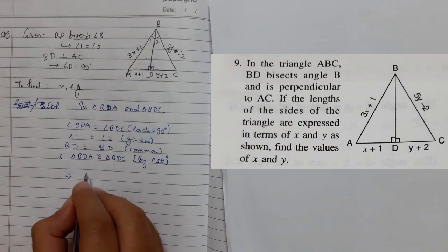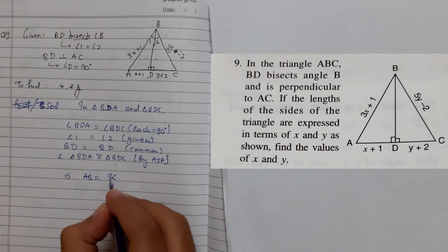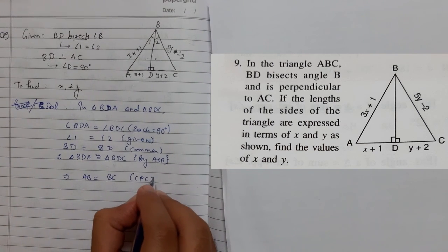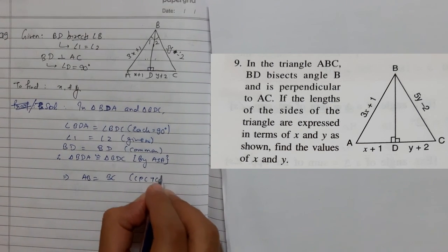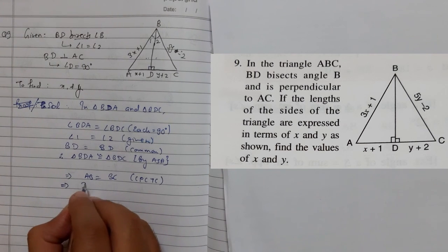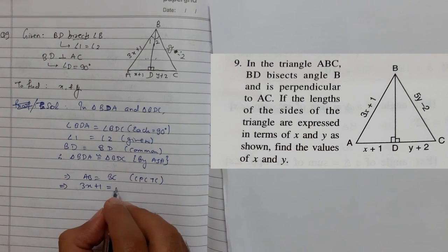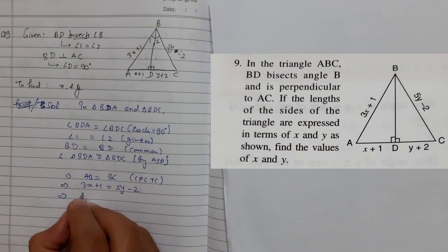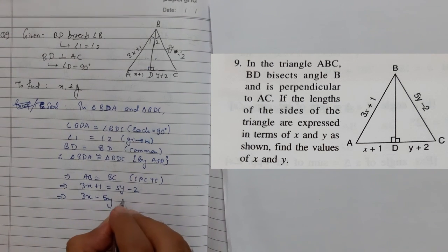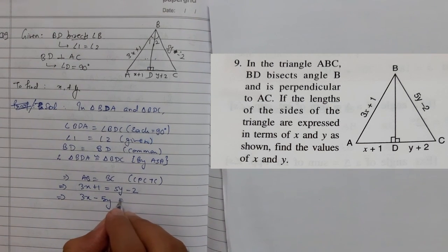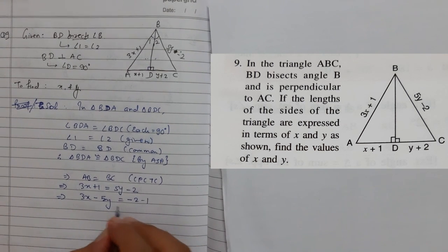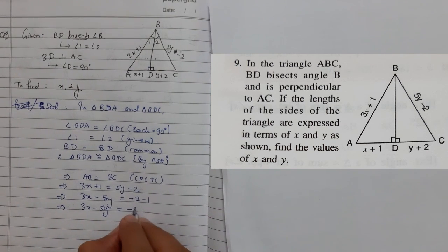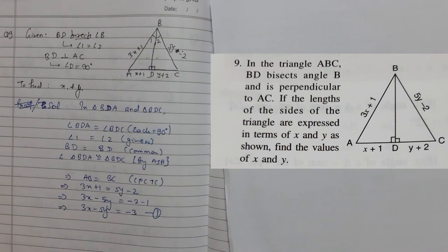So I can say AB equals BC. AB equals BC by CPCT. Therefore, I can say 3x plus 1 equals 5y minus 2. So we have an equation: 3x minus 5y equals minus 3. This is our first equation.